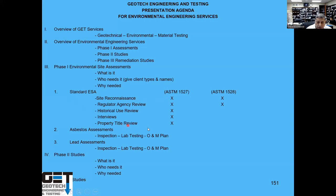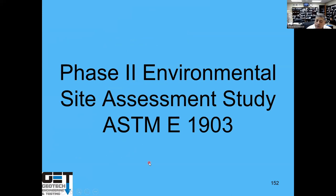It's called a Phase One Environmental Site Assessment. You do a site reconnaissance, check with EPA, TCEQ, and Texas Railroad Commission. You check historical land use and interview people and property owners. Sometimes you do a title review. This is based on ASTM 1527. If there is an existing building on the site, like an old school, you've got to demolish it and worry about asbestos and lead-based paint. If there is potential for contamination, you get into a Phase Two Environmental Site Assessment per ASTM E1903.